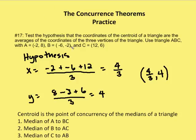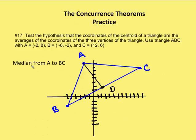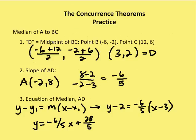Now let's verify. We only need two of the medians. We're going to find the median from A to BC, calling the midpoint of BC point D. So AD is the median from A to BC. We find the midpoint of BC: (-6 + 12)/2 for x and (-2 + 6)/2 for y, giving us point D = (3, 2). We've been given that A is (-2, 8).